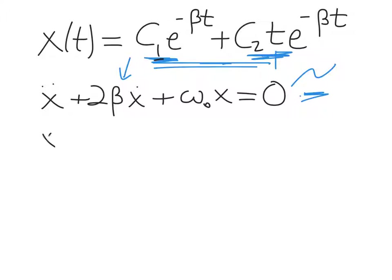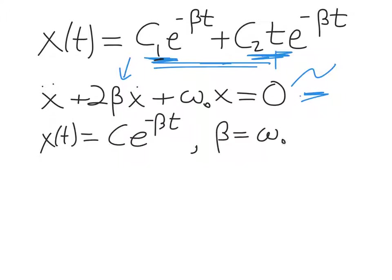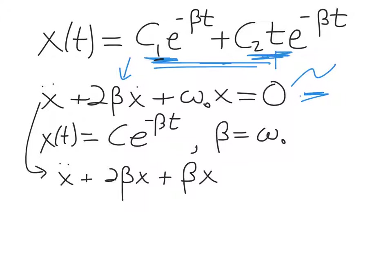For the critical damping case, beta equals omega naught, so the differential equation becomes ẍ + 2βẋ + β²x = 0. Taking two time derivatives of x(t) = c₁e^(−βt) gives us c₁β²e^(−βt) for the first term.